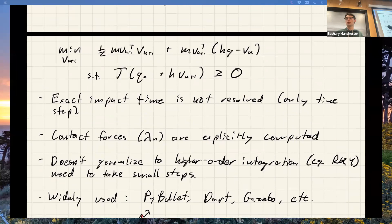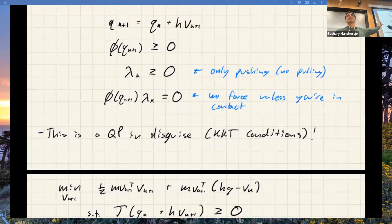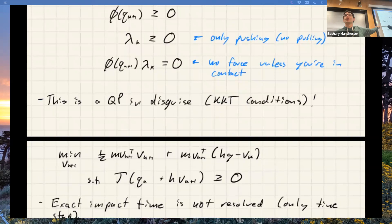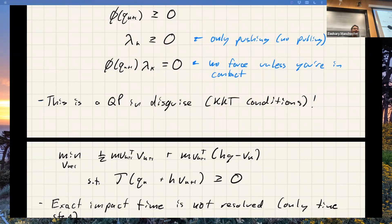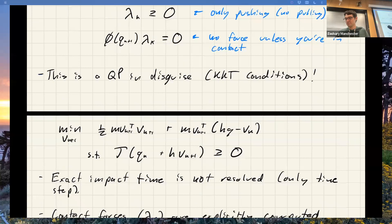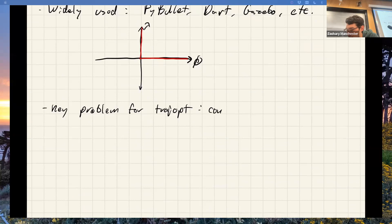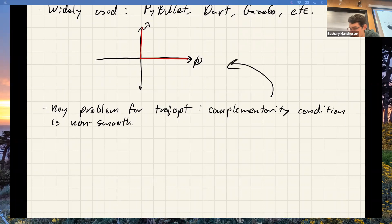The key problem for control is that these dynamics, when used as constraints in a trajectory optimization problem, require embedding those KKT conditions as constraints in the solver. The really nasty part is the complementarity condition — geometrically it's this L-shaped feasible set with a corner, no volume, non-differentiable. Naively throwing those conditions into a trajectory optimization problem really does not work — it violates the smoothness and regularity assumptions that underlie most solvers. There's also a connection to Hamilton's principle and least action from mechanics.